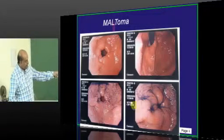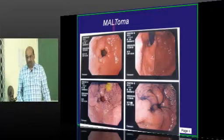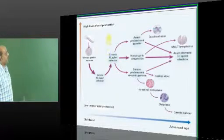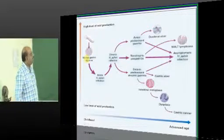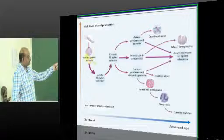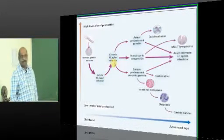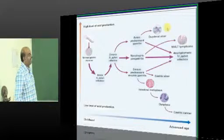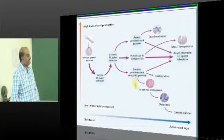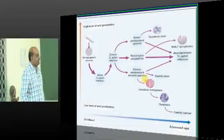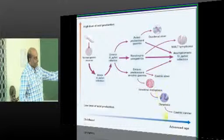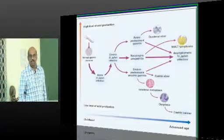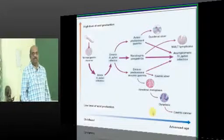In summary, H. pylori's pathogenic ability: high levels of acid production occur, and normal gastric mucosa is acutely infected, then becomes chronic. Chronic infection leads to antral-predominant gastritis and ultimately duodenal ulcer. It also leads to non-atrophic pangastritis and corpus-predominant atrophic gastritis, ultimately causing gastric ulcer, intestinal metaplasia, and gastric cancer. Non-atrophic pangastritis also predisposes to MALToma.